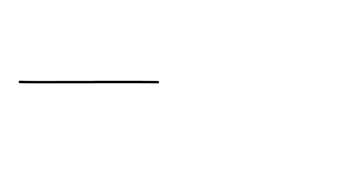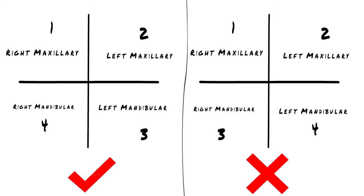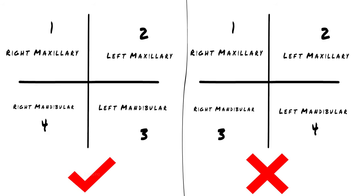To divide the jaws into quadrants, we draw two lines — one horizontally and one vertically, which bisects the first line from the center. Now we have four zones, each representing one quarter of your mouth, named as right maxillary, left maxillary, left mandibular, and right mandibular. The way I'm numbering these quadrants is also very important, and you will understand more on this later.